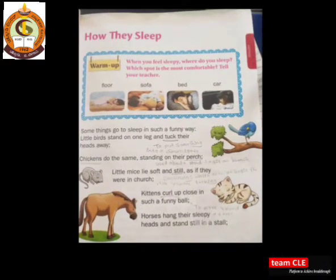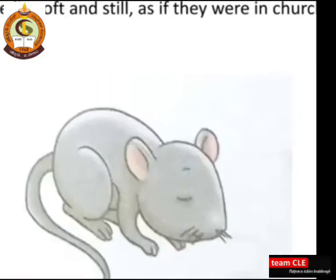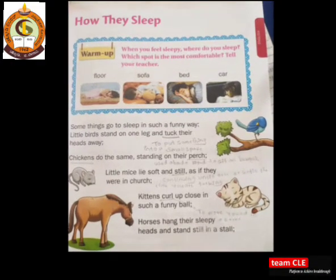Here, 'something' means animals or birds. The poet is talking about the different sleeping habits and styles of these animals and birds. In the previous class, we learned that the poet is describing and comparing chickens and mice to a judge. We have learned these two stanzas in the last class.